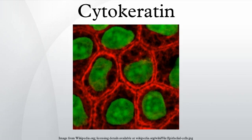Cytokeratins are proteins of keratin-containing intermediate filaments found in the intracytoplasmic cytoskeleton of epithelial tissue. The term cytokeratin began to be used in the late 1970s when the protein subunits of keratin intermediate filaments inside cells were first being identified and characterized. In 2006, a new systematic nomenclature for keratins was created, and now the proteins previously called cytokeratins are simply called keratins.